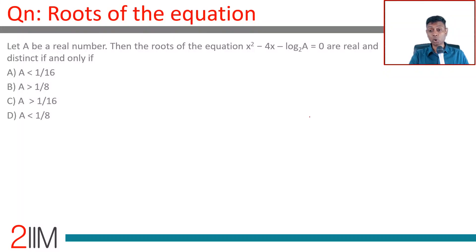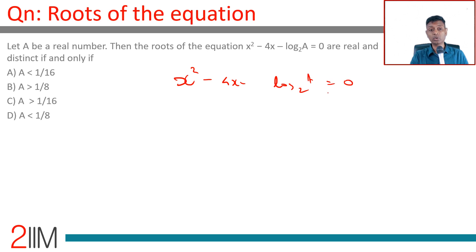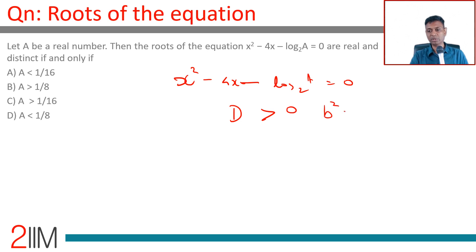Let a be a real number. The roots of the equation x squared minus 4x minus log a to the base 2 equal to 0 are real and distinct. For real and distinct roots, the discriminant must be greater than 0.